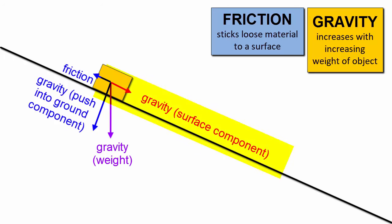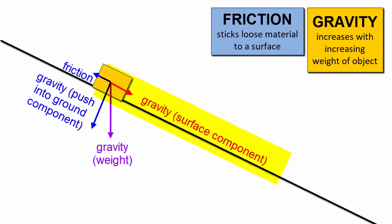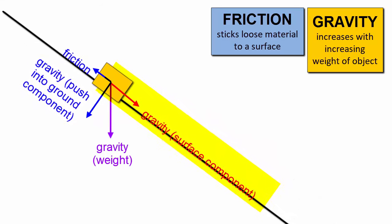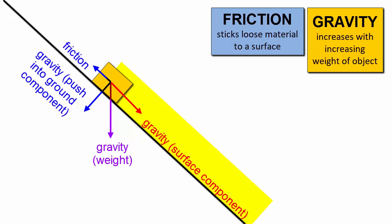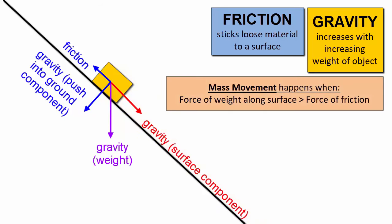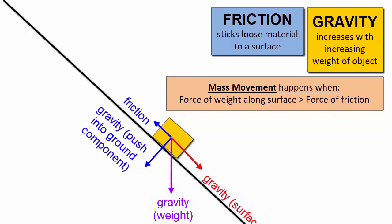Notice what happens to the force of its weight along the surface as the hillside steepens. The arrow gets longer, meaning the surface component of the force is getting greater. Once we get the hillside steep enough that the weight component along the surface is greater than the frictional force, the object will move downhill.